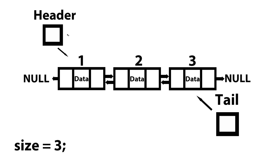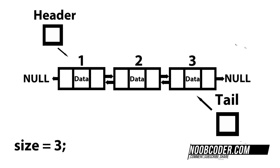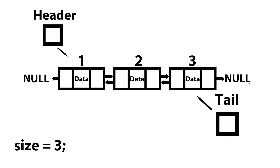Moving on to case three: what happens if we want to add to the end of our list? So that would be position four. If the position being passed in is equal to size plus one — which gives us four — that means we're going to call the append method. The append method is going to create the new node for us, and our tail pointer is going to be updated to the newly inserted node.